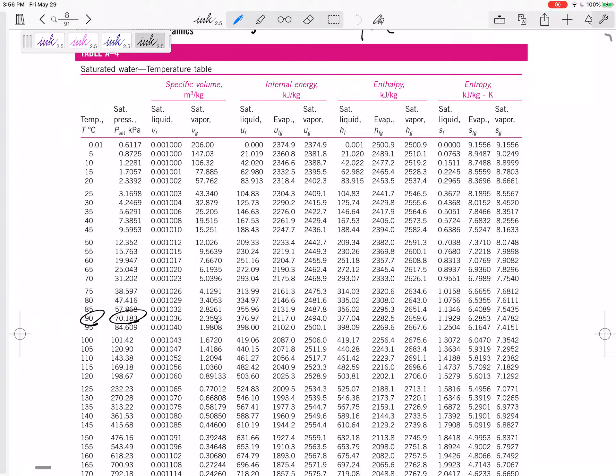So what specific volume should I use? Should I use 2.3593, or should I use 0.001036, or is it somewhere in between the two? Yeah, it's somewhere in between the two. How far in between the two? I need to calculate the quality X.